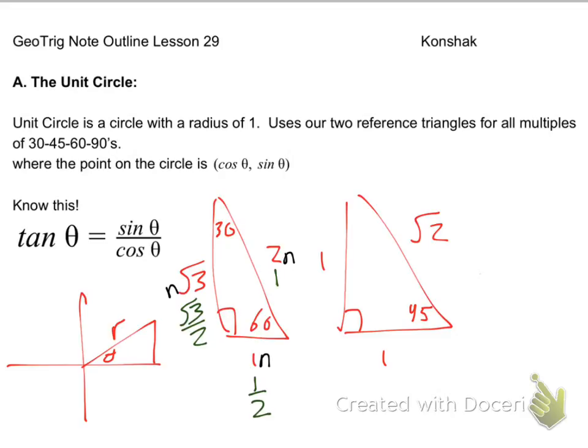Wait a minute. A half? Square root of 3 over 2? Aren't those some of those values that we found by using SOHCAHTOA? Sine of 30 is opposite, which is 1 half, over hypotenuse, which is 1. That allowed me to have a radius or hypotenuse of 1.